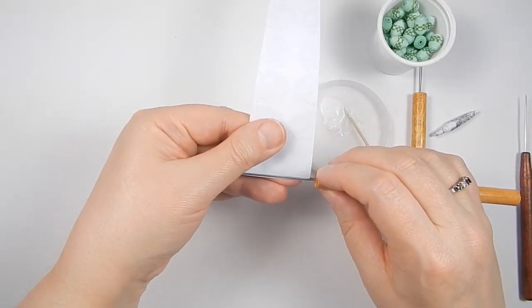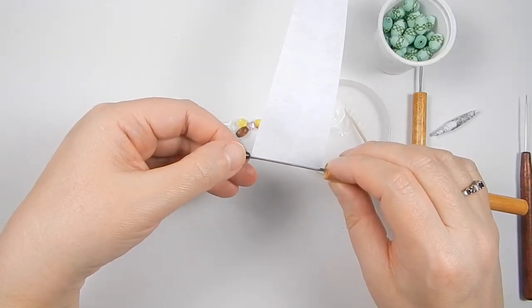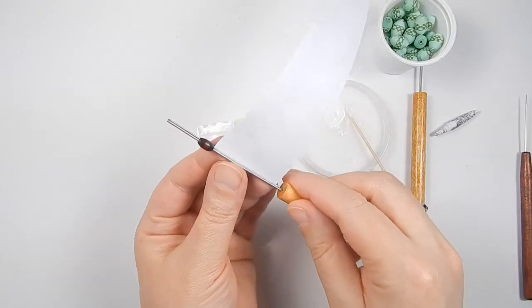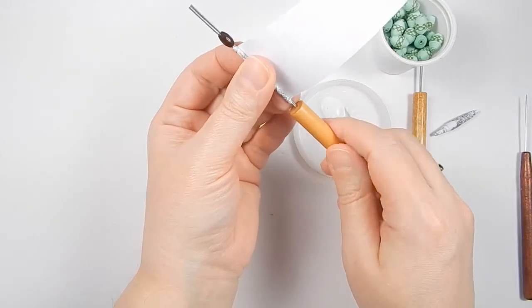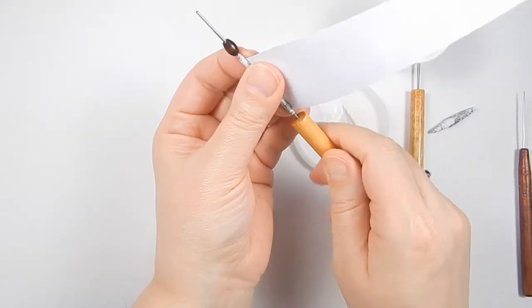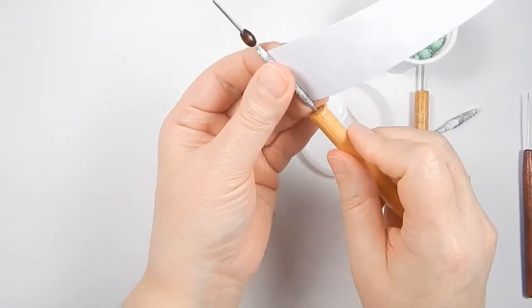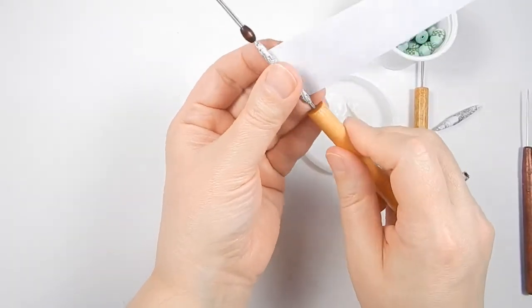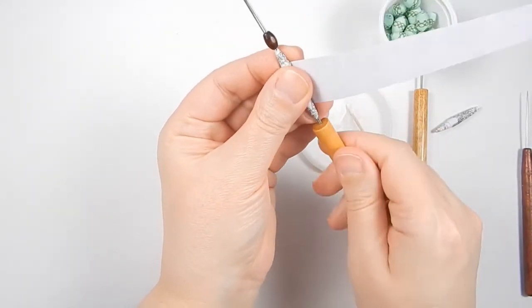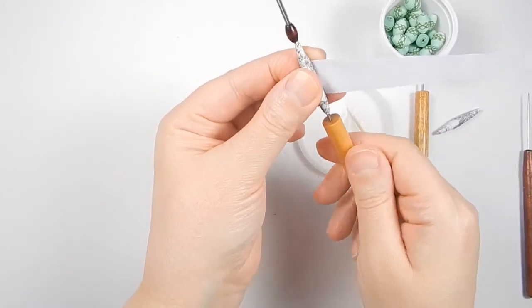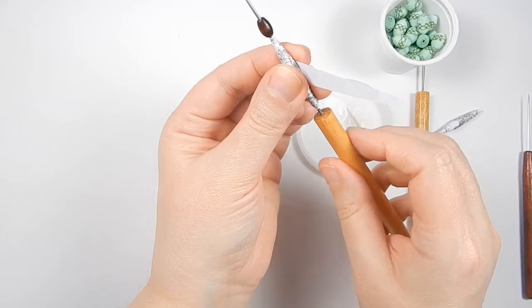Pull it up so that you can barely see it, push the bead up closer to stabilize it even more, and start rolling. Again, don't put the glue on it until you reach the end. That way you can adjust it if you need to.